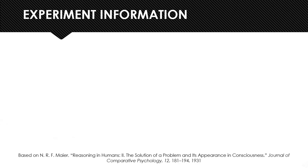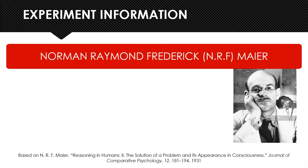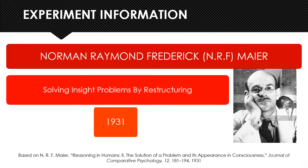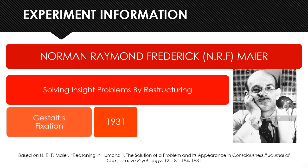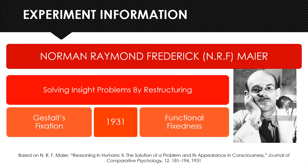Starting off with a little information about the experiment: Maier's two-string problem was conducted by an experimental psychologist named Norman Raymond Friedrich Maier in 1931. This experiment was about solving insight problems by restructuring, based on Gestalt's principle of fixation — or more specifically, addressing the concept of functional fixedness.